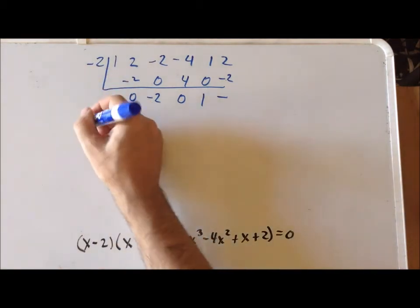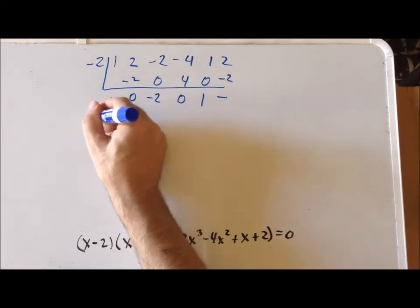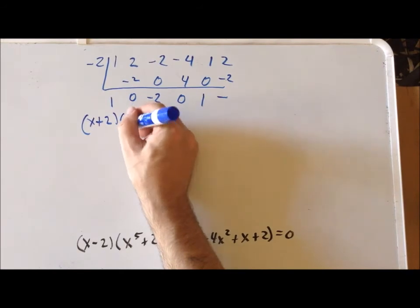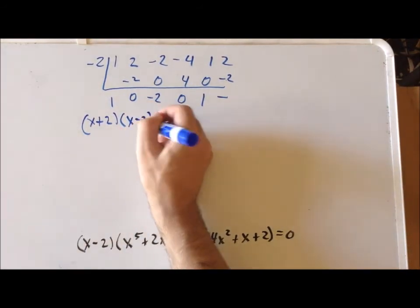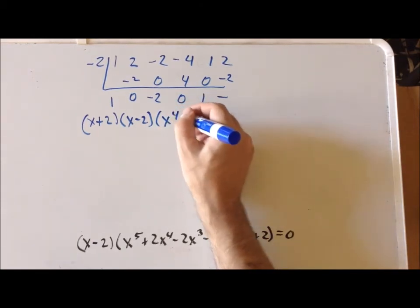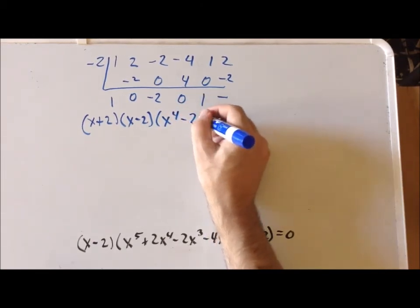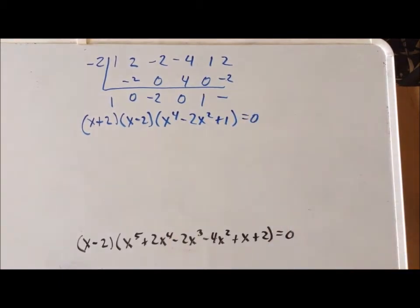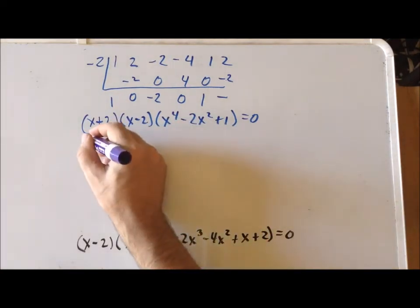So that tells us that x plus 2 is a factor. We already know that x minus 2 is a factor. And the resulting polynomial that remains is going to be x to the fourth minus 2x squared plus 1 equals 0. And we can recognize that, again, we only have even powers of x. So that suggests that we can do the following substitution.